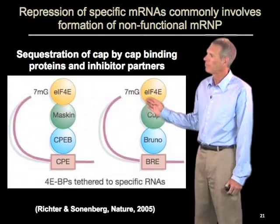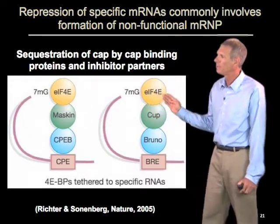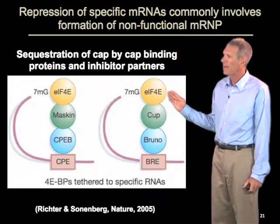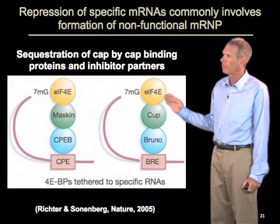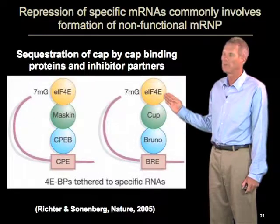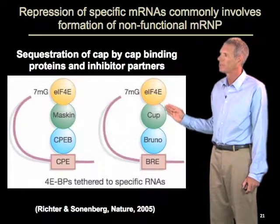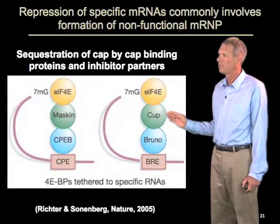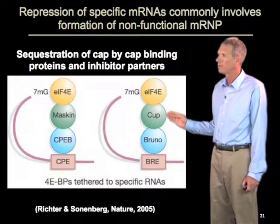Interestingly enough, a common theme in those types of complex is that the CAP structure is bound by the CAP binding protein EIF4E, which we've been discussing — but now instead of being partnered with EIF4G, it's partnered with other proteins.